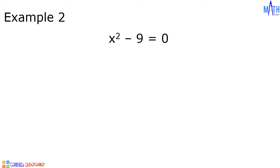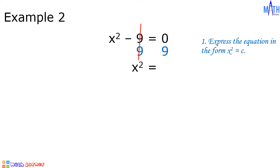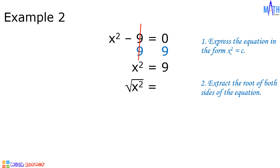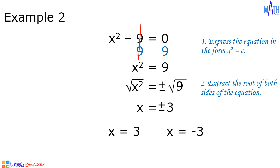Example number 2: let us solve x squared minus 9 is equal to 0. Step 1, express the equation in the form x squared equals c by adding positive 9 to both sides. x squared minus 9 plus 9 equals x squared, and 0 plus 9 equals 9. Step 2, extract the root of both sides: square root of x squared equals positive or negative square root of 9. Since 9 is a perfect square, square root of 9 equals positive or negative 3. Therefore, x sub 1 equals positive 3 and x sub 2 equals negative 3.